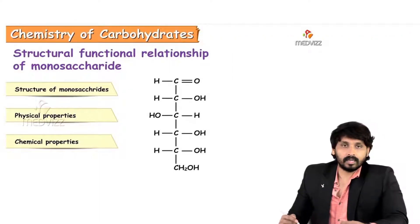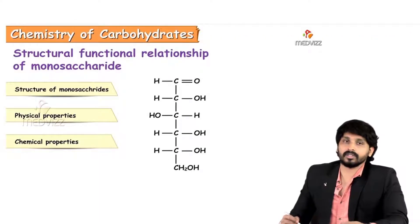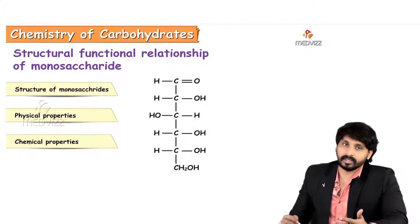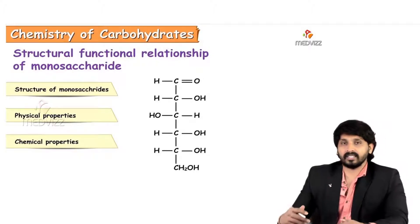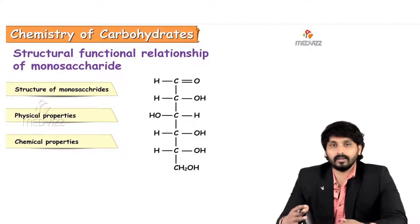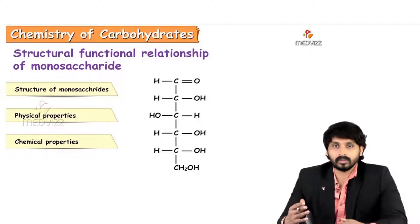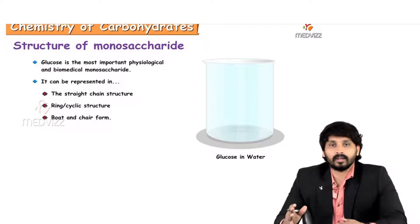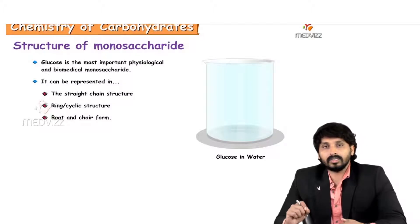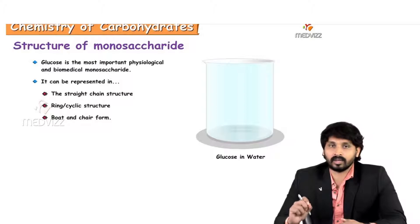In this video, we will be discussing the structural functional relationship of monosaccharides under these categories: structure of monosaccharides, physical properties, and chemical properties. The best example we have taken to explain all these properties is glucose along with fructose. Whenever we are talking about the structure of a monosaccharide, the best example we can give is glucose, because glucose is the most important physiological and biomedical monosaccharide.